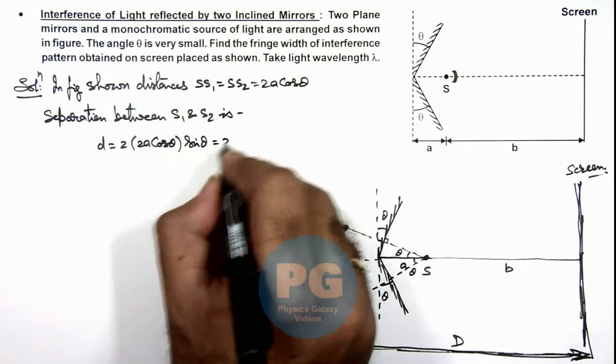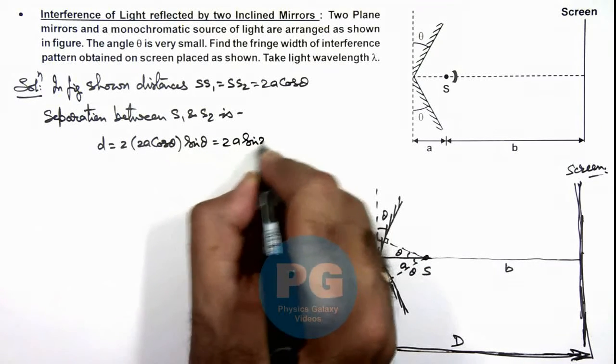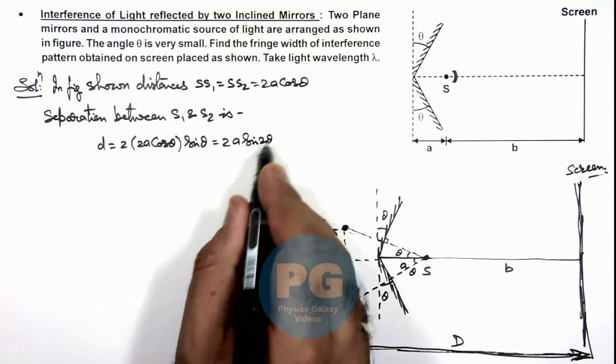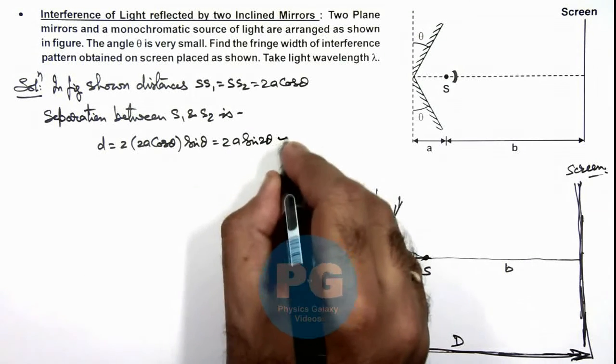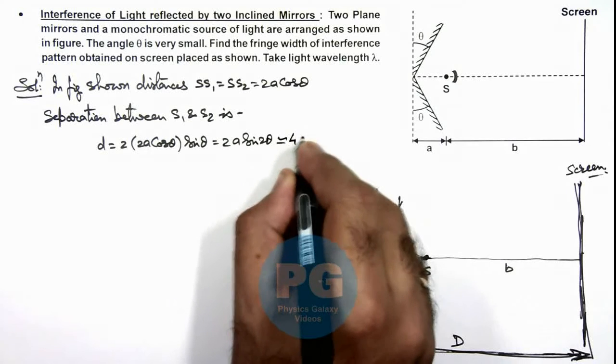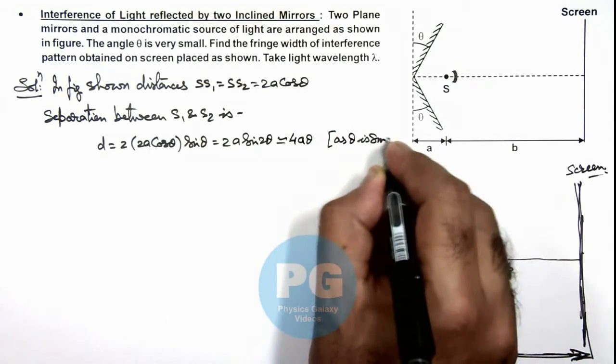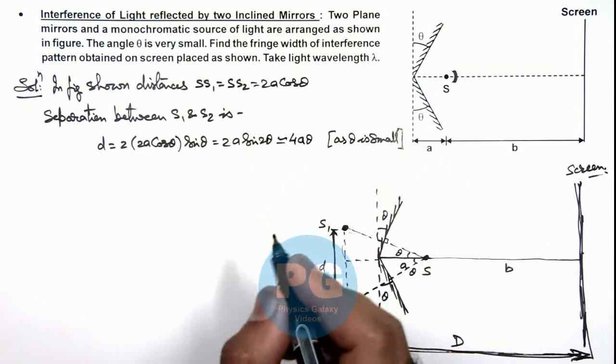Which we are getting is 2a sine 2 theta. And in this situation, the value for a small angle theta we can write approximately as 4a theta. We can write as theta is small. We are already given in the problem that theta is small.